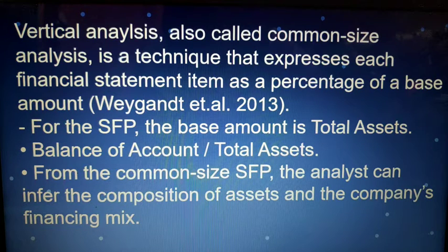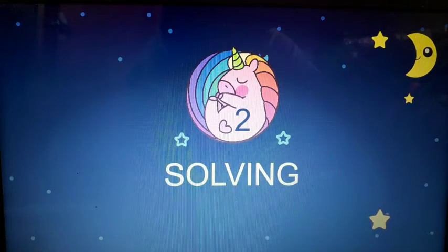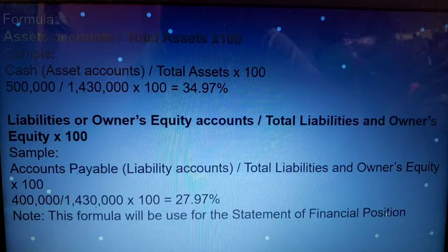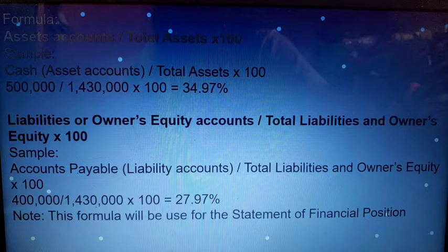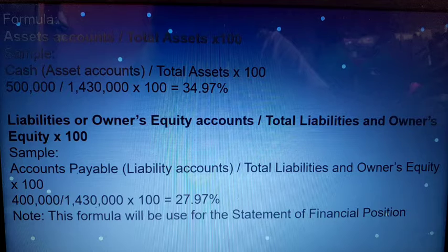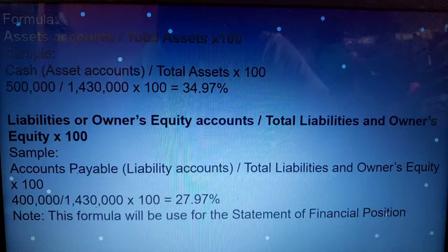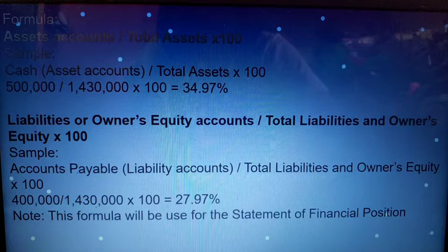We will see this further when we get to the solving. This is the formula for vertical analysis: the asset account divided by the total asset, times 100%. So if cash is the asset account, you divide it by total assets times 100 to get the percentage.